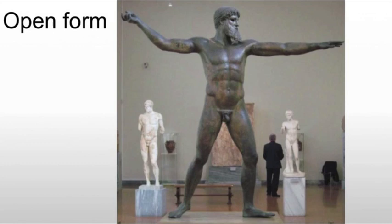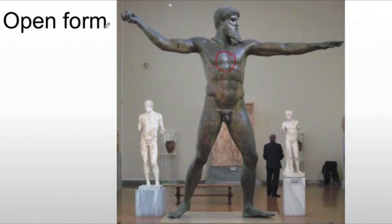Open form directs the human eye out of the sculpture. The artist is actually trying to get us out of the sculpture. Usually we're going to start at the center of mass, and then our eye is going to move around. In this case, he's supposed to be holding a javelin or something here, so everything is pointing us in one direction — we're automatically going to start looking off this way and eventually leave the piece out the left arm.